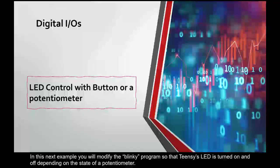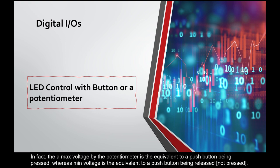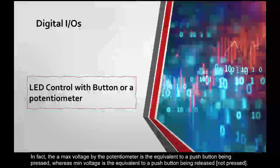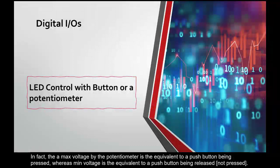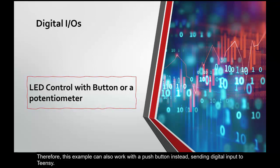In this next example, you will modify the Blinky program so that Teensy's LED is turned on and off depending on the state of the potentiometer. In fact, the max voltage by the potentiometer is the equivalent of a push button being pressed, whereas min voltage is the equivalent to a push button being released. Therefore, this example can also work with a push button instead, sending digital input to Teensy.